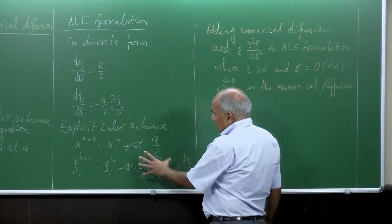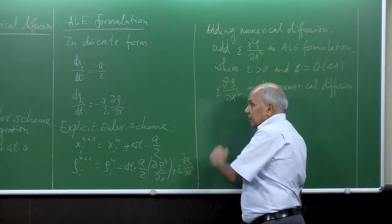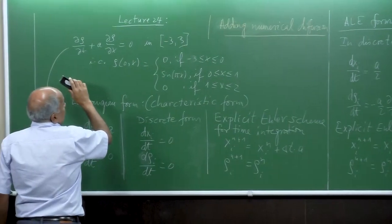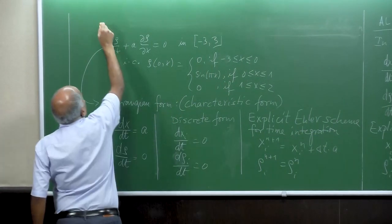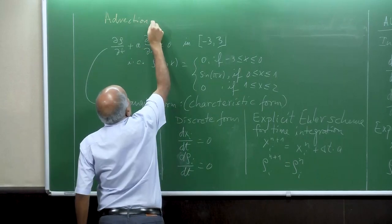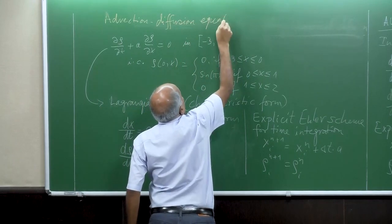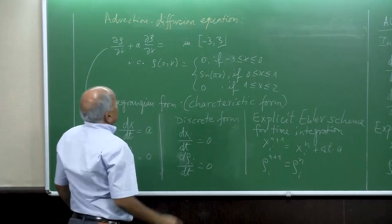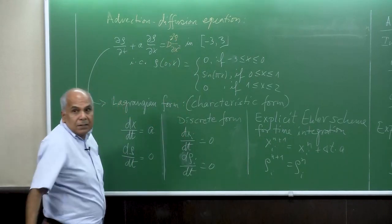Once we know how to stabilize the oscillation, we can solve the numerical diffusion as a second-order derivative directly. It is a continuation — we can directly handle the advection-diffusion equation. So what is the advection-diffusion equation? In our finite difference scheme we used D times ∂²ρ/∂x², where D is a positive diffusion coefficient.